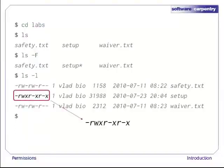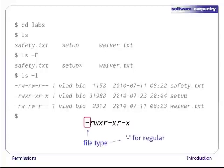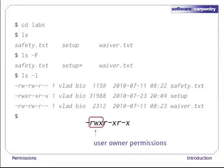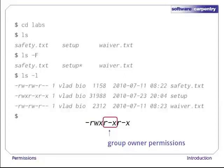Let's expand one of those permission strings and have a closer look. The first character tells us what type of thing this is: a dash means it's a regular file, while a d means it's a directory. The next three characters tell us what permissions the file's owner has. Here, the owner can read, write, and execute the file. The middle triplet shows us the group's permissions — r-x means read and execute but not write. The final triplet shows us what everyone who isn't the file's owner or in the file's group can do.